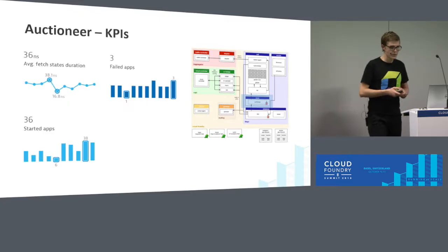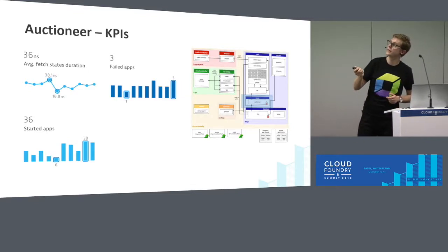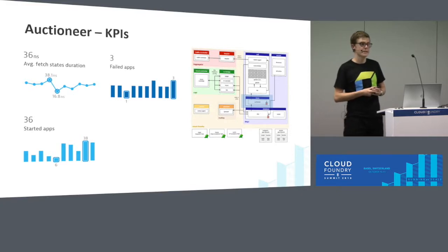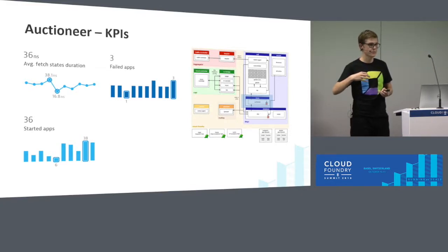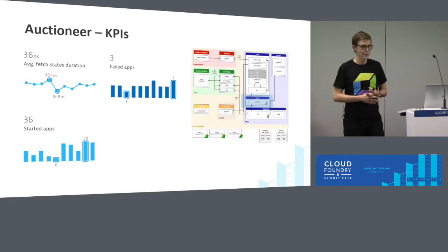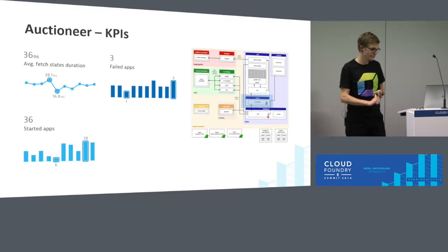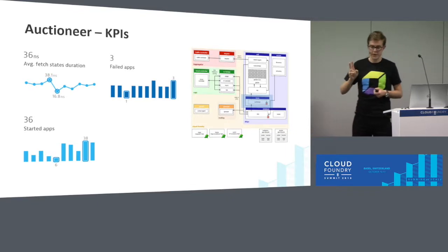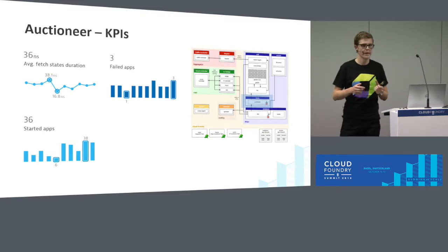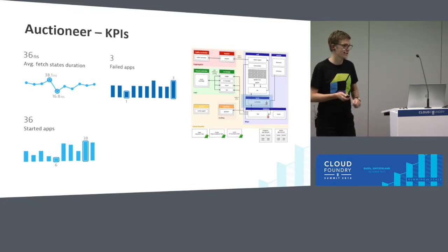To characterize the auctioneer, Pivotal has recommended three KPIs. The first, shown in the top left, is the average fetch duration — the time it takes the auctioneer to get the state from a Diego cell. It needs this state because the auction algorithm must decide where space is available for the next application. The other two KPIs tell us how many apps could not be successfully deployed and how many apps were successfully deployed on a Diego cell.